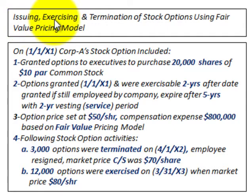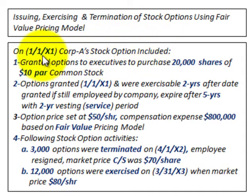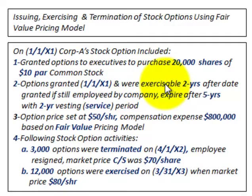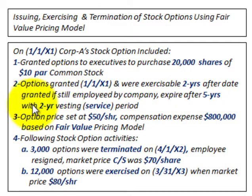What we're going to be going through here is issuing, exercising, and the termination of stock options using the fair value pricing model. On 11/X1, Corporation A's stock options included: they granted options to their executives to purchase 20,000 shares of their $10 par common stock. The options were granted on 11/X1 and were exercisable two years after the date granted, if the employee was still employed by the company, and they expired five years later. This is a two-year vesting or service period required before the employee can exercise those stock options.